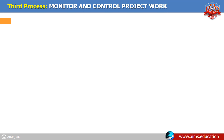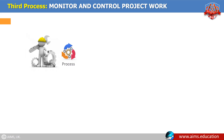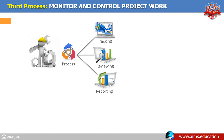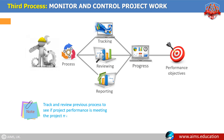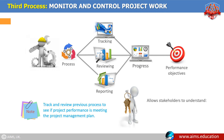Third process: monitor and control project work. It is the process of tracking, reviewing, and reporting the progress of the project in order to meet the performance objectives. Note: the work being done in the previous process is tracked and reviewed here to see if project performance is meeting the project management plan. Key benefit: this process allows stakeholders to understand the current state of the project, steps taken, and forecasts for budget, schedule, and scope.